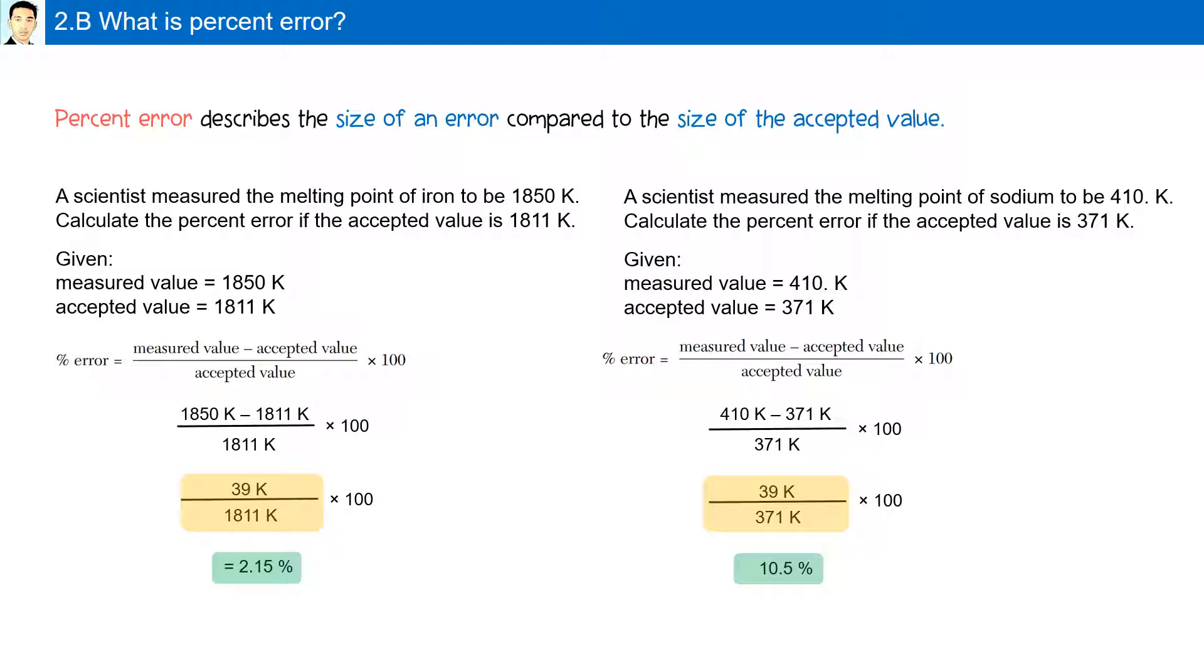in the first example, the accepted value was very large, 1811 kelvins, compared to the second example, 371 kelvins. Therefore, in the second experiment, the percent error was a lot greater, 10.5%, compared to the first experiment, 2.15%.